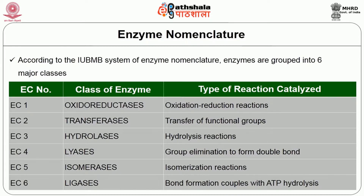According to the International Union of Biochemistry and Molecular Biology system of enzyme nomenclature, enzymes are broadly classified into six major classes. EC1 are oxidoreductases, which catalyze oxidation-reduction reactions. EC2 are transferases, where enzymes transfer a particular functional group. EC3 are hydrolases, which catalyze hydrolysis reactions.